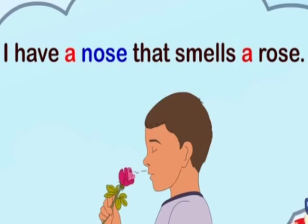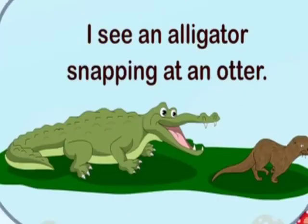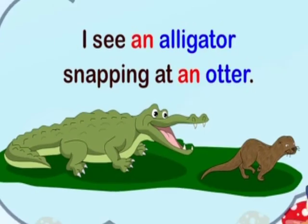Let's see another example. I see an alligator snapping at an otter. Here, we have used AN before alligator and otter. Can you tell me children, why we used AN and not A before alligator and otter?